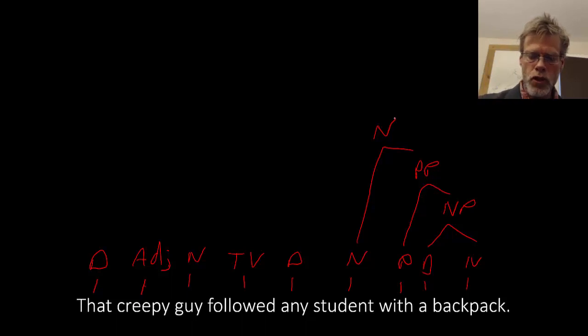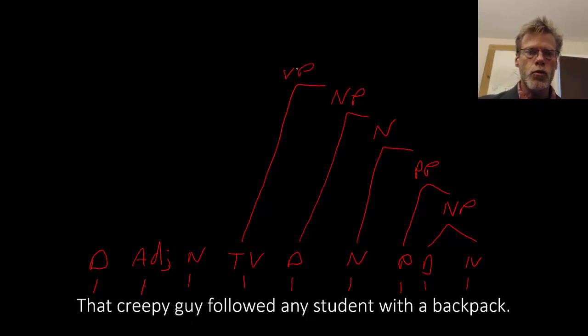And of course, then we see a determiner right in front of that, which gives us a noun phrase. Then we see a transitive verb. Transitive verb takes as its complement a noun phrase, meaning that we get a verb phrase right here. And since we know this is a sentence, then we can predict that what comes right before it is going to be a noun phrase.